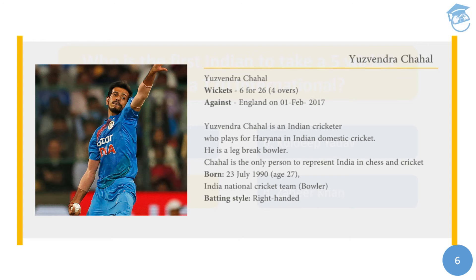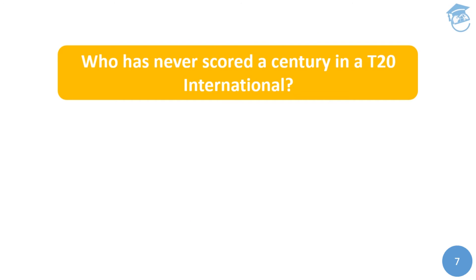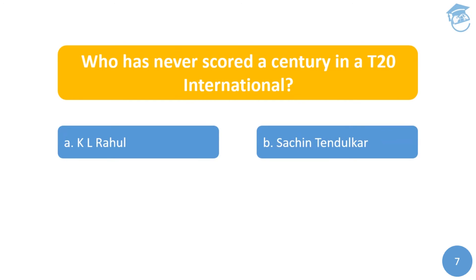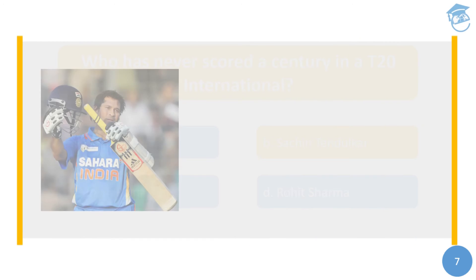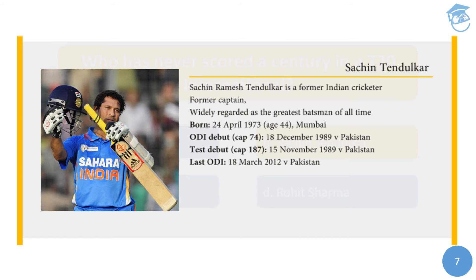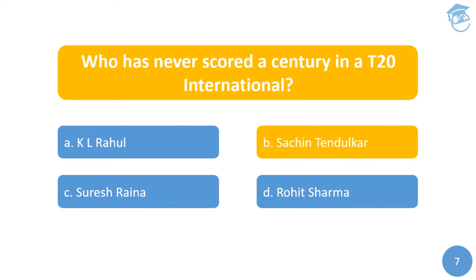The seventh question: who has never scored a century in a T20 international? Options are: A) KL Rahul, B) Sachin Tendulkar, C) Suresh Raina, or D) Rohit Sharma. The answer is Sachin Tendulkar. Unfortunately the Master Blaster played very few T20 internationals and so he couldn't score a century in that format. You can refer to our previous quiz wherein we have discussed in detail about all those players who have scored a century in T20 international.